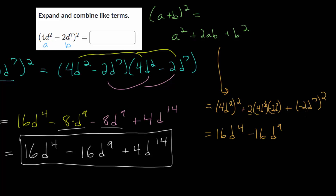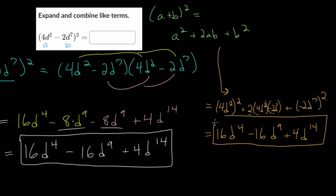Then we have minus 2d to the seventh and we're squaring it. Minus 2 times minus 2 is positive 4, and d to the seventh with an exponent to an exponent — we multiply: 7 times 2 is 14, giving 4d to the 14th. Notice 16d to the fourth minus 16d to the ninth plus 4d to the 14th — we have the exact same answer using the formula. Since we arrived at the same answer using two different methods, we can feel confident this is correct.